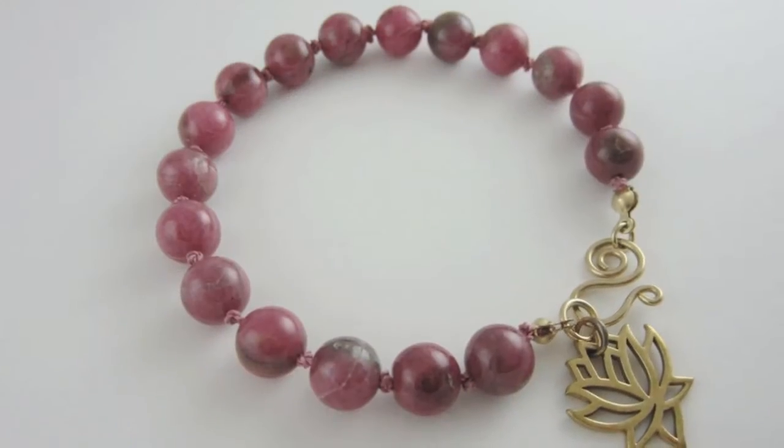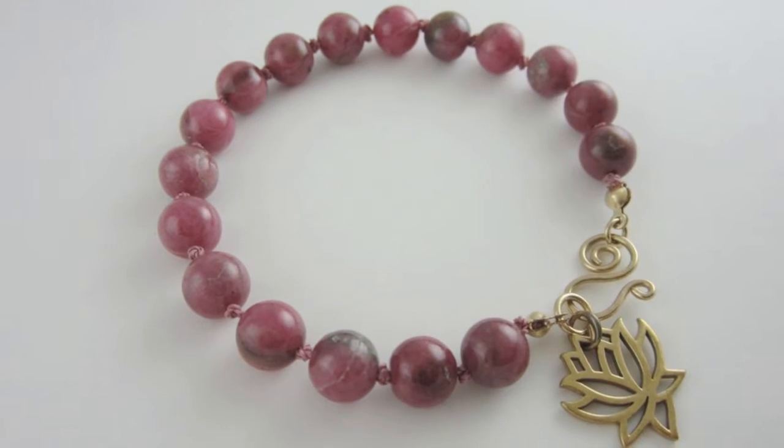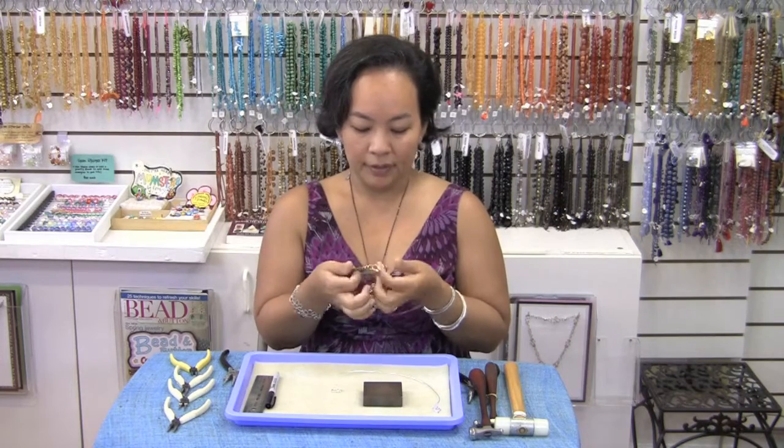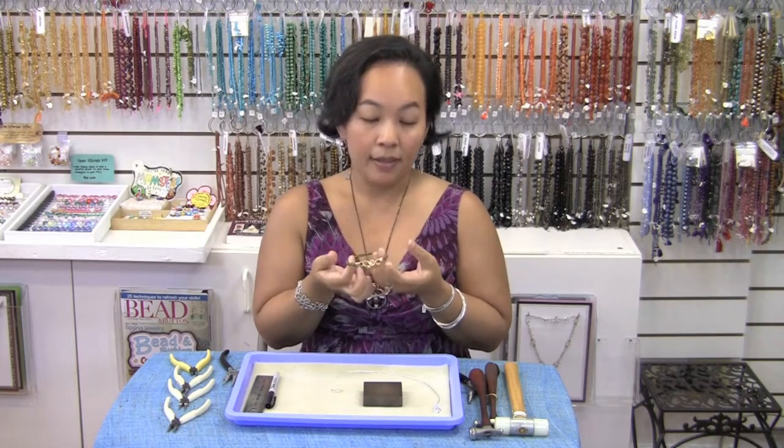A hook and eye clasp is a really nice alternative to a toggle or a lobster clasp because they're very easy to put on. You just hook them on like this. They're very secure if your project is fitted properly.